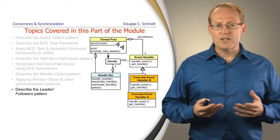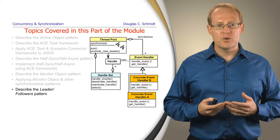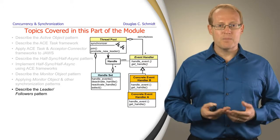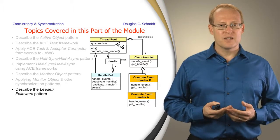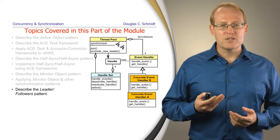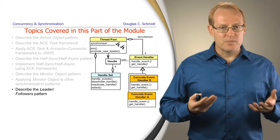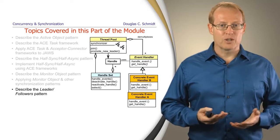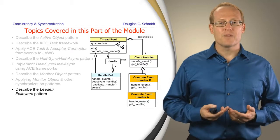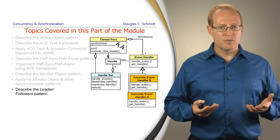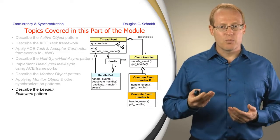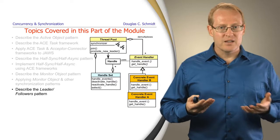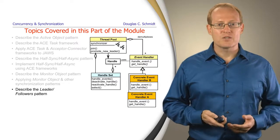What we're going to do now is turn our attention to one final concurrency pattern in this module, which relates to something called the leader-follower pattern. This pattern is another way to provide pools of threads that access underlying event sources.